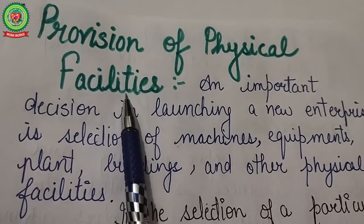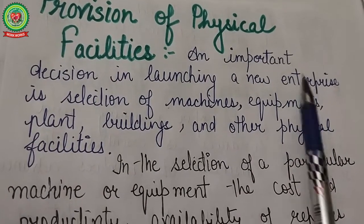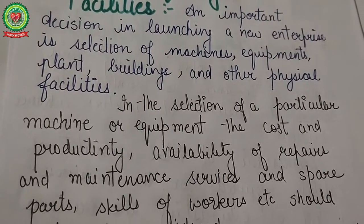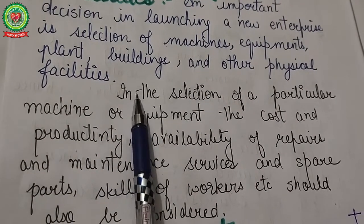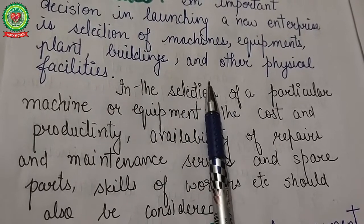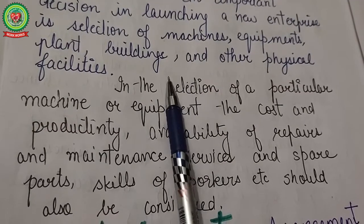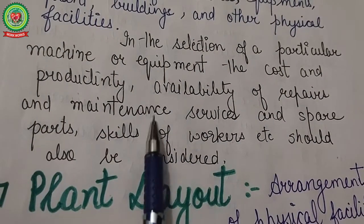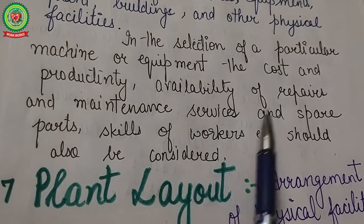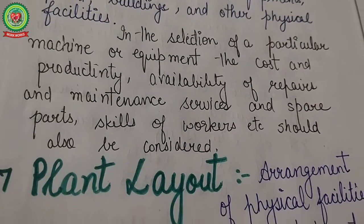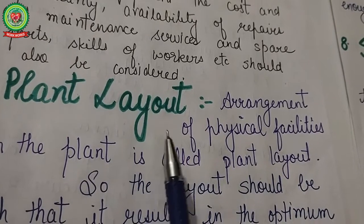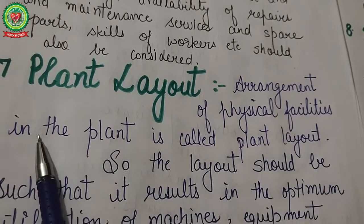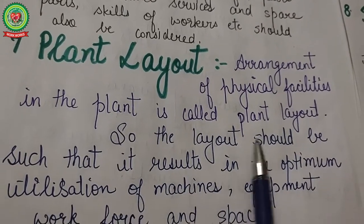The next step is the provision of physical facilities. An important decision in launching a new enterprise is the selection of machines, equipment, plant, building, and other physical facilities. The nature of physical facilities depends on the size of the firm, nature of the business, process of production, and availability of funds. In selecting a particular machine or equipment, cost, productivity, availability of repair and maintenance services, spare parts, and skills of workers must also be considered. After selecting machinery and equipment, it is necessary to arrange them efficiently — this arrangement is called plant layout.